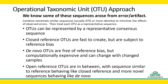With our OTU approach, we know some sequences arose from errors, and we essentially blur out these errors by combining very similar sequences and treating them as a unit represented by a consensus sequence. These clustered units are very fast to create using closed reference clustering, but may be subject to reference bias. They may be generated de novo or reference-free, but this is computationally expensive and clustering patterns can change with the addition or removal of samples. They can also be created using open reference clustering, which combines the two previous methods and has properties somewhere between them.